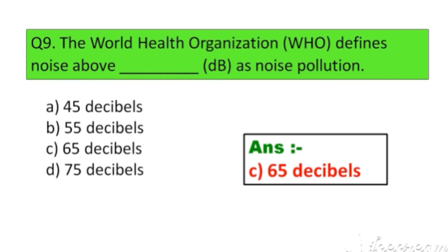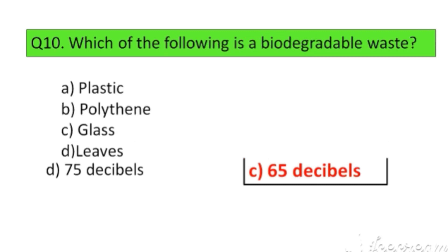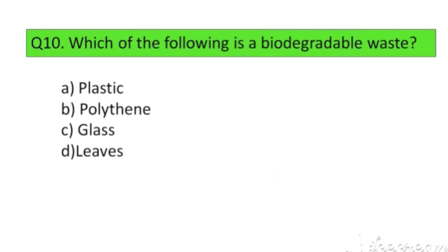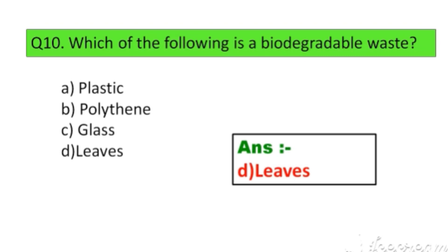Question number 10. Which of the following is a biodegradable waste? Option A. Plastic, B. Polythene, C. Glass, D. Leaves. The right answer is Option D: Leaves.